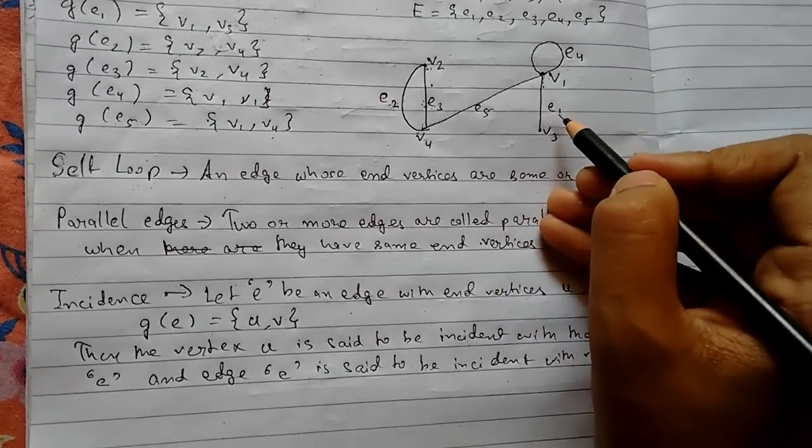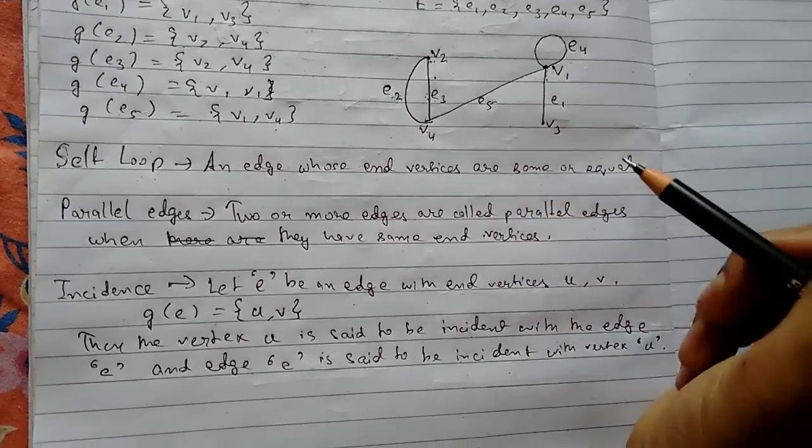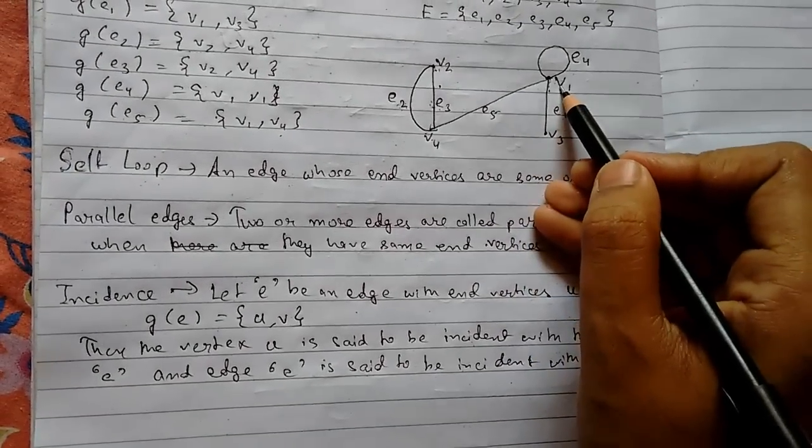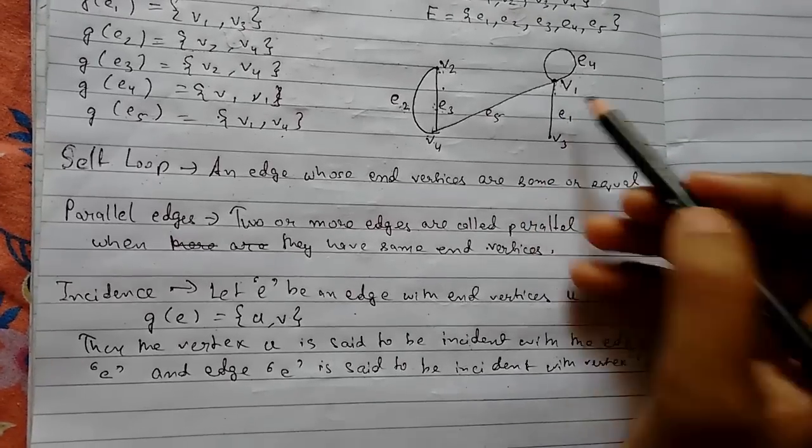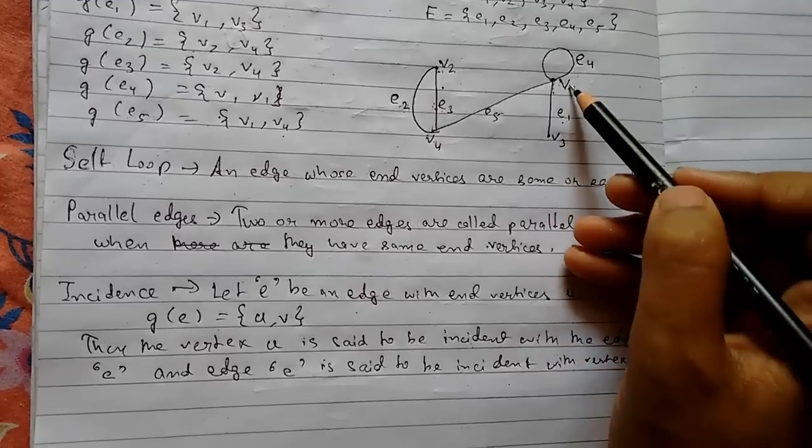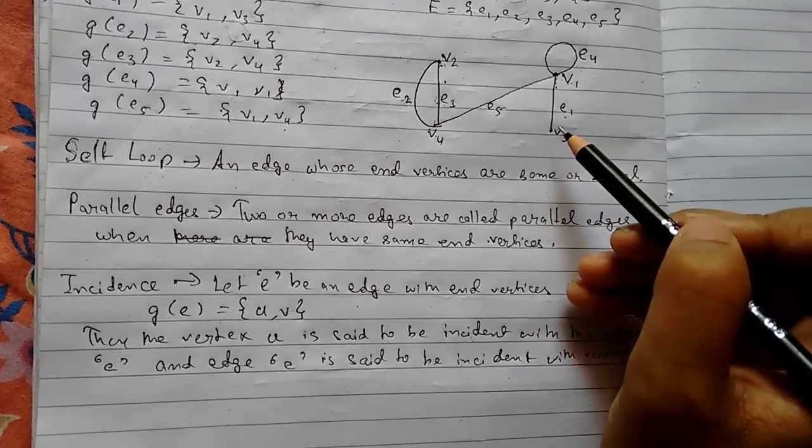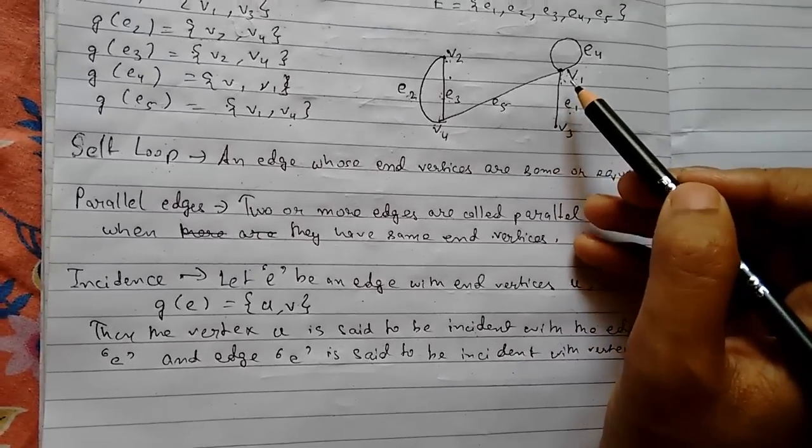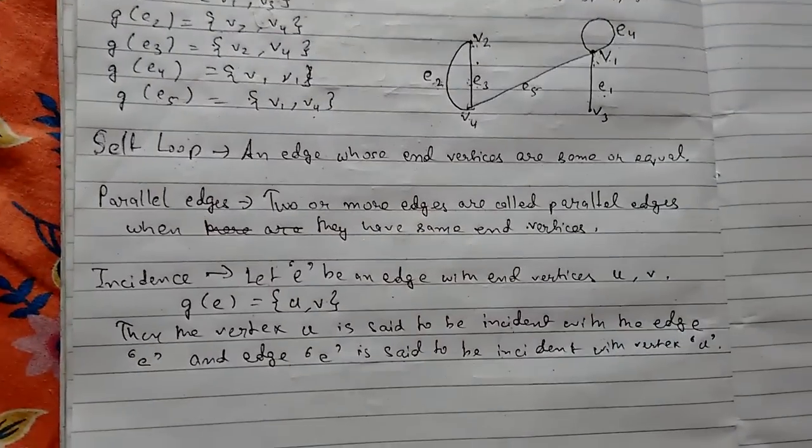For this example, edge e1. First we will take vertex v1, which is said to be incident with edge e1. Or we can also say that edge e is incident to vertex v1.